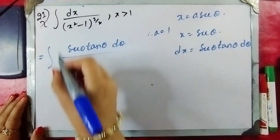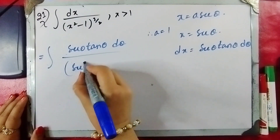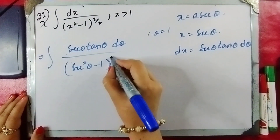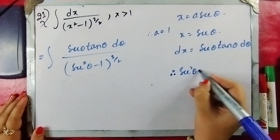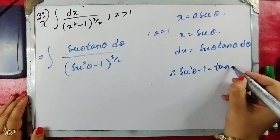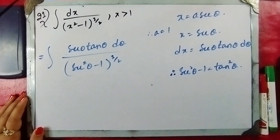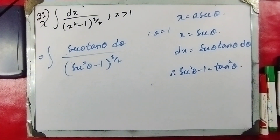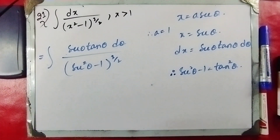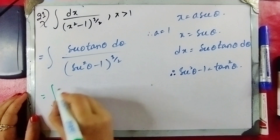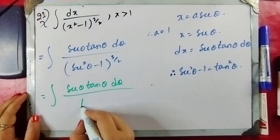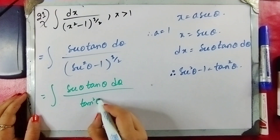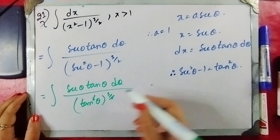We have secant of theta, and x squared minus 1 to the power 3/2. Recall that secant squared of theta minus 1 equals tangent squared of theta. So we get secant of theta · tangent of theta · tangent of theta · d-theta divided by tangent squared of theta to the 3/2, and the 2s cancel with tangent of theta.